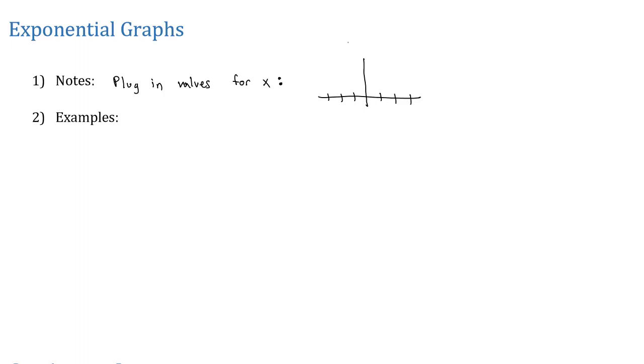If we're doing the exponential function y equals some base to the x, a couple key points will appear on every single one of these graphs. There will be a point at (0, 1) because when the exponent is 0, the answer is 1. And also there will be a point at (1, b) because when the exponent is 1, the answer is b.